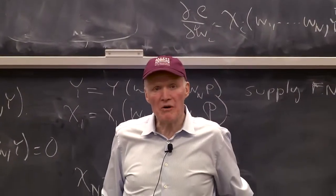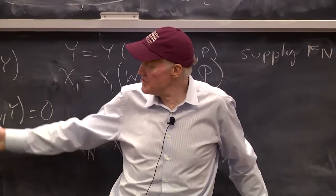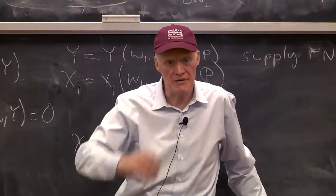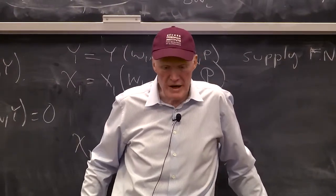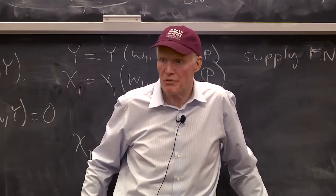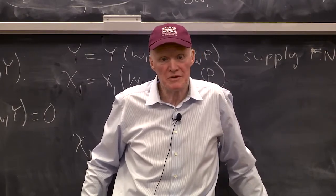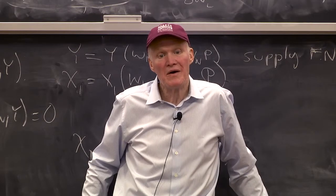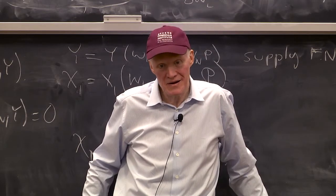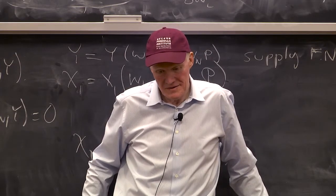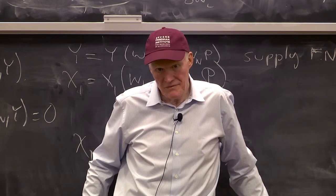Why do costs go up? Why are there diminishing returns to scale? Why can't I, if I want to produce twice as much output, just use twice as much inputs?